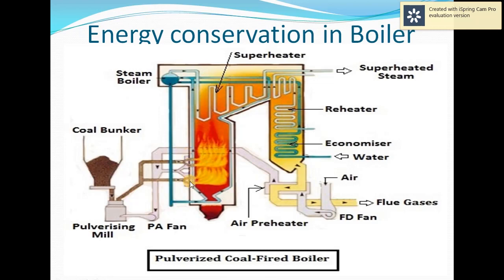Inside the boiler, we have to burn this coal — to do the combustion. For the combustion process, air is required. This is the second circuit: the FD fan (forced draft fan) sucks atmospheric air through a duct and passes it through the air preheater where it gets hot. Hot air is then supplied to the boiler for combustion. Coal and air combine there and a fireball is produced. Heat energy is evolved in this section.